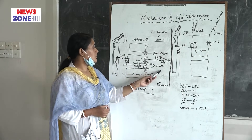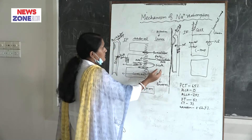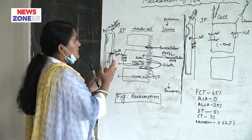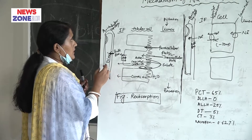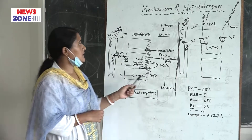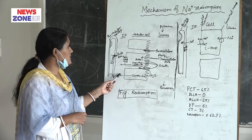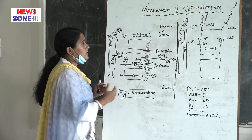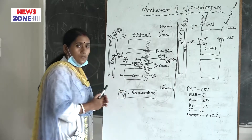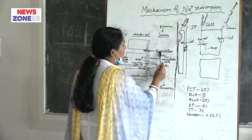In kidney tubular reabsorption, solute and water move from the lumen into the interstitial fluid, then into the blood. The tubular cell can be crossed by two pathways: the transcellular pathway or the paracellular pathway.